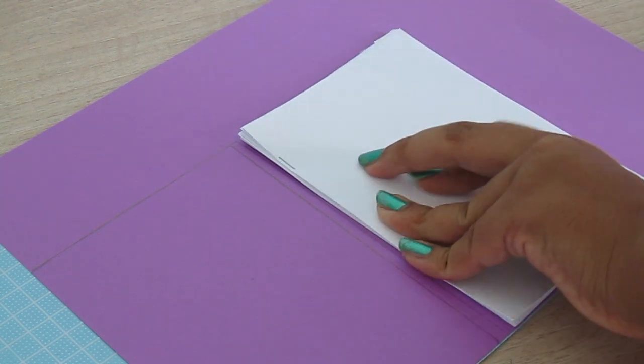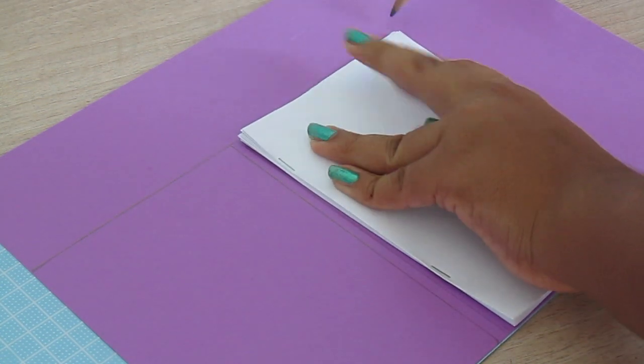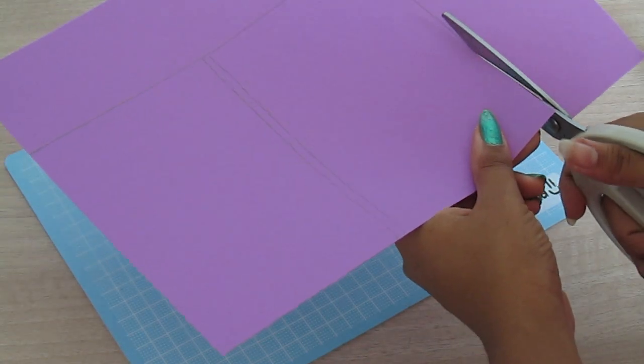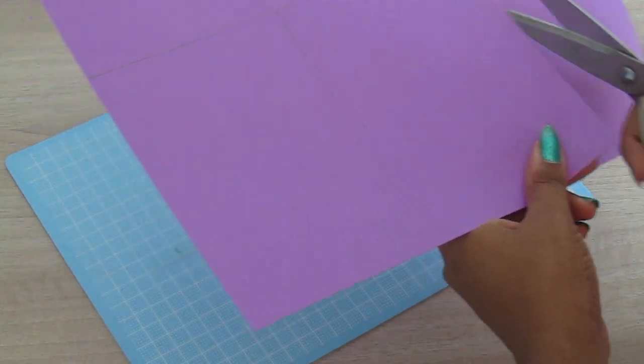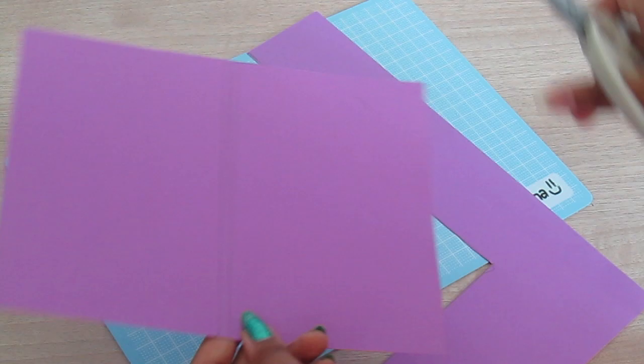Darken it and cut the whole shape out. It's a large rectangle. This is what you should have.